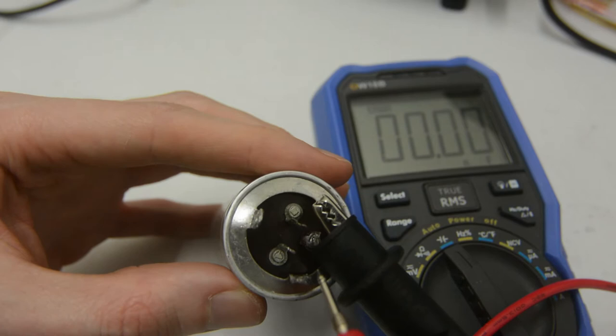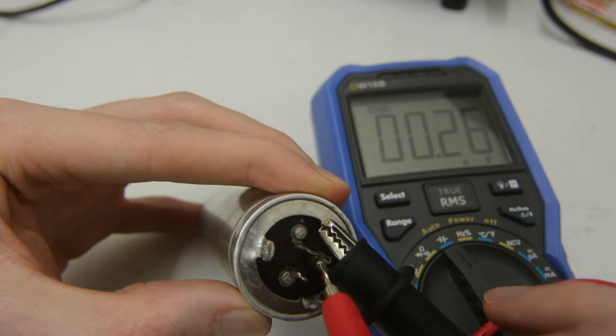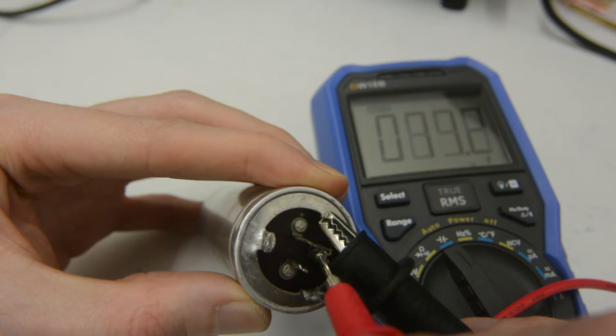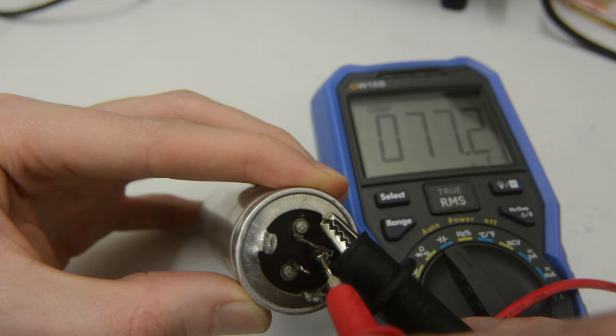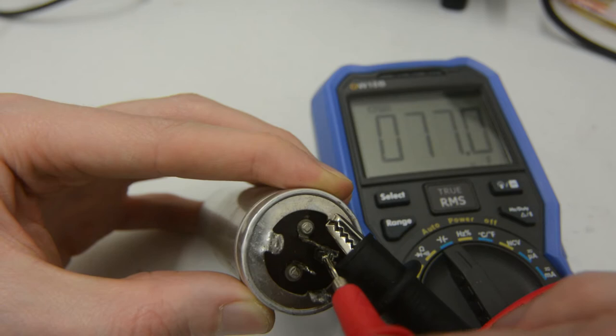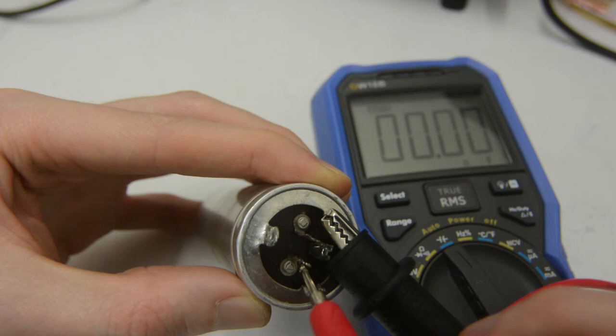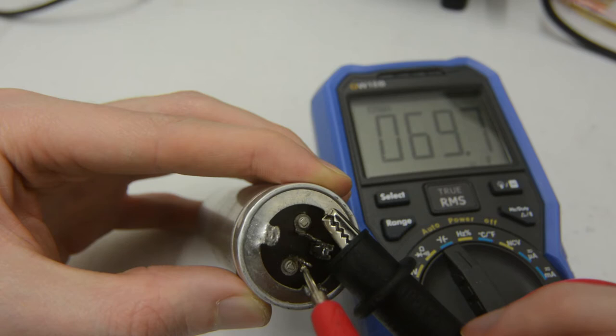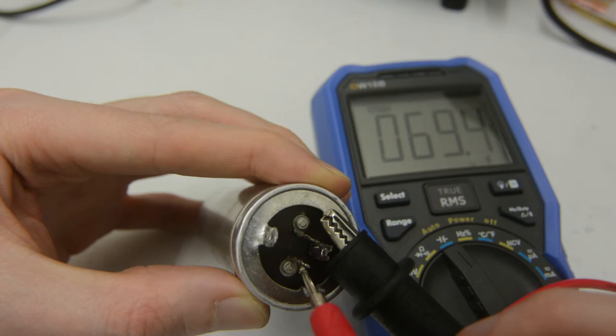But then let's check the other ones. They should be 100 microfarad each. So let's check this one. And let's wait a while, because this can also take a while. 77. Yes, 77. So that is a bit low. That's 30% low. 79. Okay, 20%, let's say 20, 25% low. So that one is out of spec. That could be better. And this one. 70. 68, 69. Yeah, 70. So this one is even worse. So that one is 30% out of spec. So they need to be replaced.